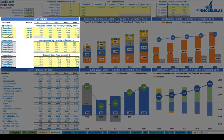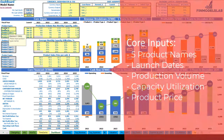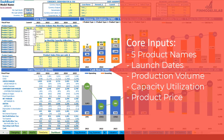Let's start from the core inputs. On the top left section you have up to five product types or groups. All these yellow cells are changeable, so you can set up Product A, Product B, or any other name you would like. The next step is to set up the launch date or start of production for each of these product types. You can use the dropdown and set any month within this five-year model.